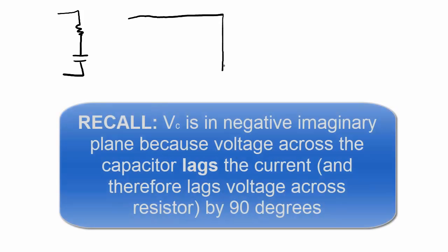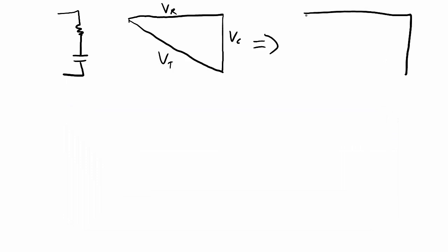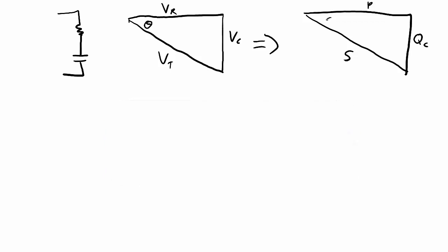The exact same relationship holds when we have a resistor and a capacitor. The voltage across the capacitor is in the negative imaginary direction, giving a total voltage from VR, VC, and VT. By the same analysis, we get a power triangle where real power is along the base, reactive power across the capacitor is in the negative direction, and apparent power is the hypotenuse. The phase difference between voltage and current is negative for this RC circuit.